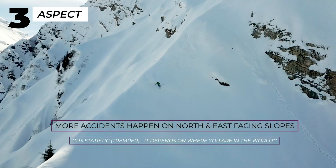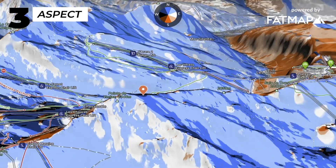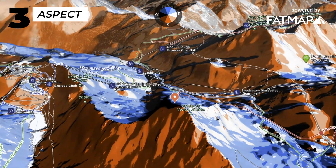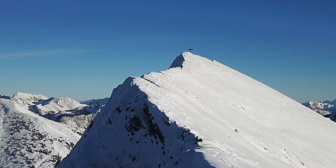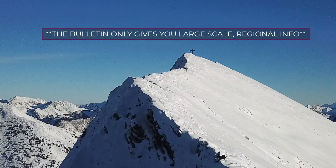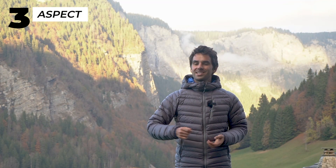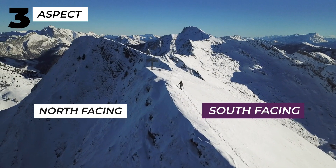Sometimes south-facing slopes are more dangerous; sometimes north-facing slopes are more dangerous. The point is you need to know the aspect of the terrain. The good news is that professionals who make the avalanche bulletin will do a lot of the hard work for you — it will tell you which aspects are more dangerous on a given day. You just need to read the bulletin and translate that information into real-world terrain. Next time you're out, ask your partner which way is north and practice naming the aspect of certain slopes.